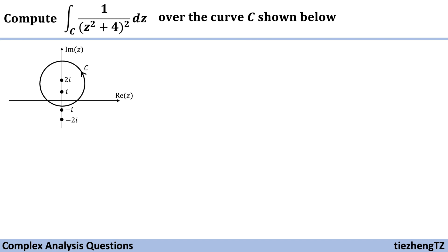This question is to compute the integral 1 over z squared plus 4 squared dz over the curve C shown here. Very similar to our previous question, we are given the integral function and the curve C, and it is really difficult for us to find the anti-derivative of the given integral function. So we know we are going to use some theorem to help us solve the question.